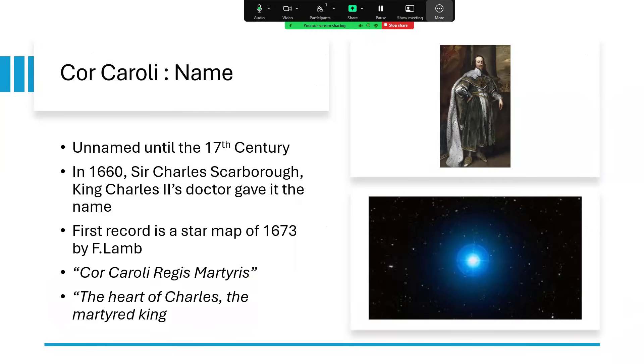The star didn't have a name until Sir Charles Scarborough decided to name it after King Charles I. He was doctor to King Charles II, son of King Charles I. In 1660 he probably coined the name Charles's Heart, and it's recorded on a star map of 1673. It's labeled as Cor Caroli Regis Martyris, which translates to the heart of Charles the martyred king. So we know it's referring to the executed King Charles I, not to his son.